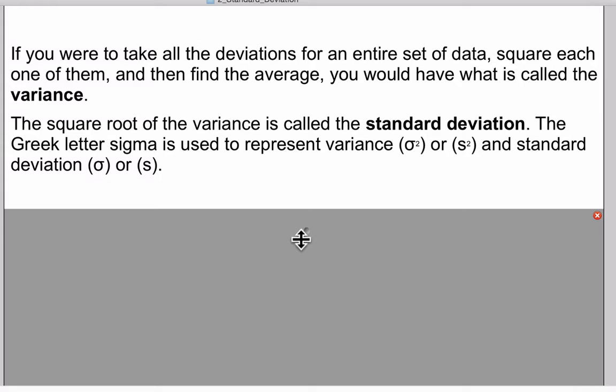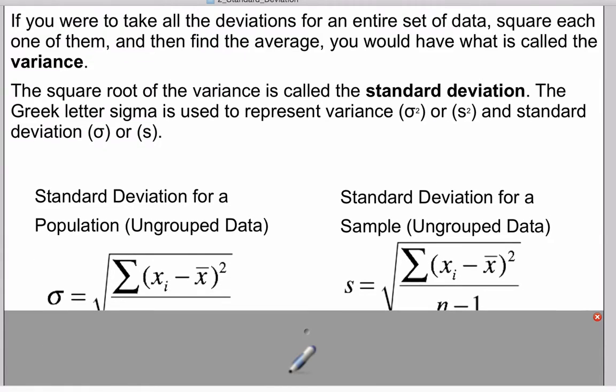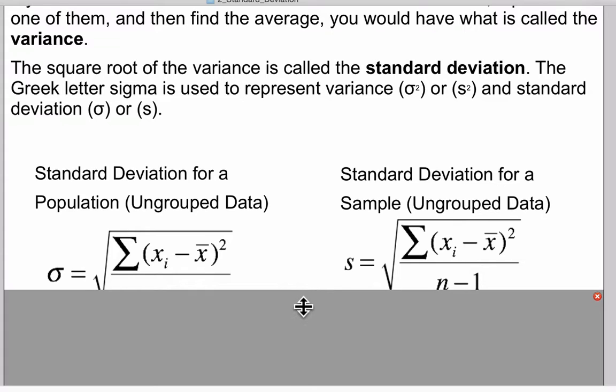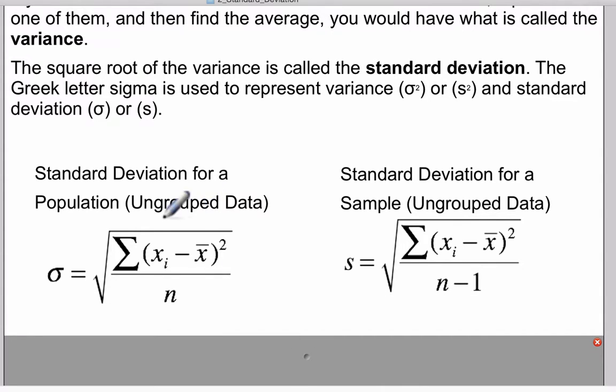We're going to use a couple of Greek letters sigma and we're also going to use s to indicate variance or standard deviation. Now standard deviation for ungrouped data will be sigma equals the square root—remember the variance is when you add up all of the deviations and square them and then find the average, which would be dividing by the number of data values in that population.